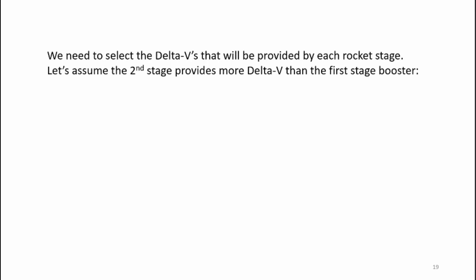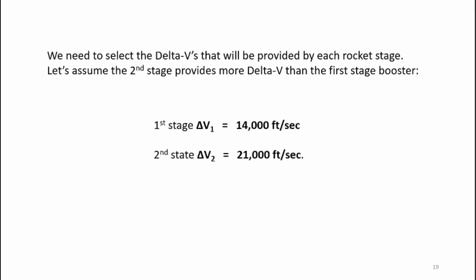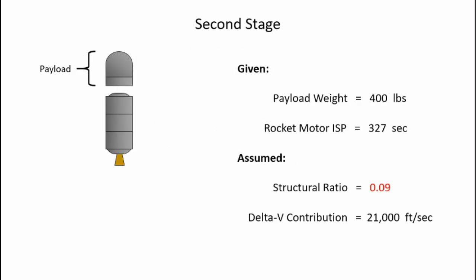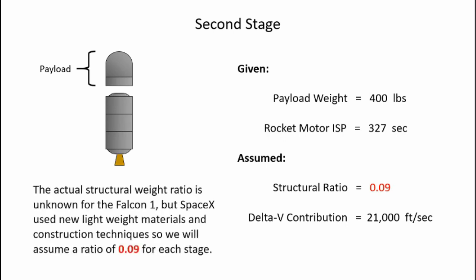We need to select the delta-Vs provided by each rocket stage. The second stage provides more delta-V than the first stage booster. So the first stage delta-V is 14,000 feet per second and the second stage provides 21,000 feet per second. For these calculations we start with the upper stage. We have a given payload weight of 400 pounds, the rocket motor ISP is 327 seconds, and I'm going to use a structural ratio of 0.09. SpaceX used new lightweight materials and construction techniques that kept the rocket very lightweight, so I'm assuming that 0.09 structural ratio for this analysis.